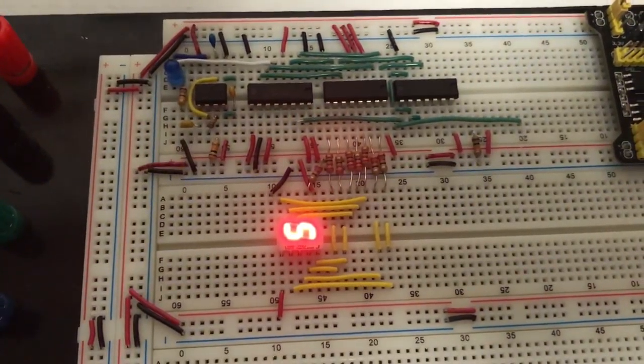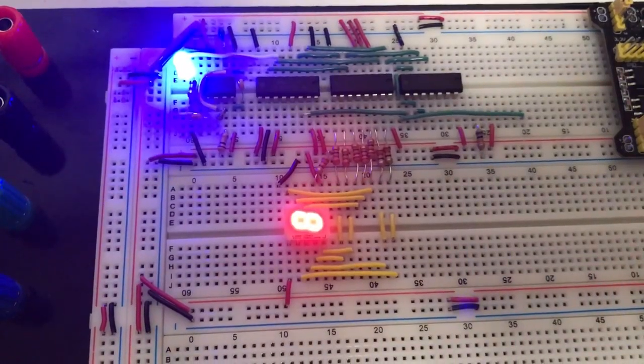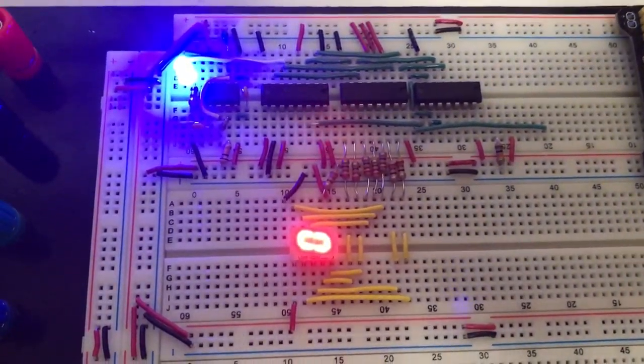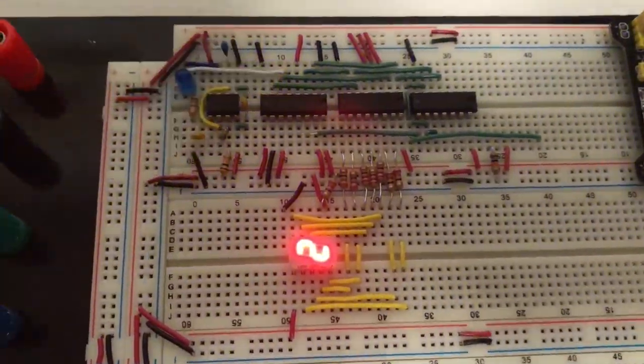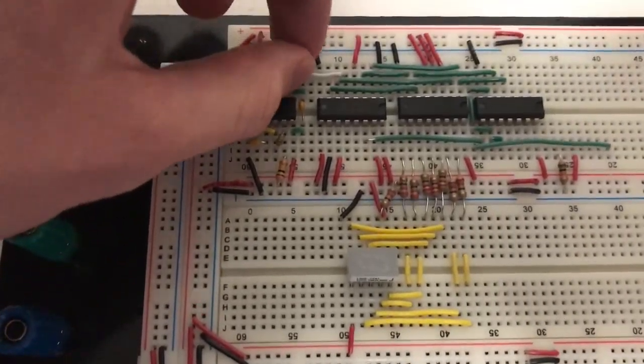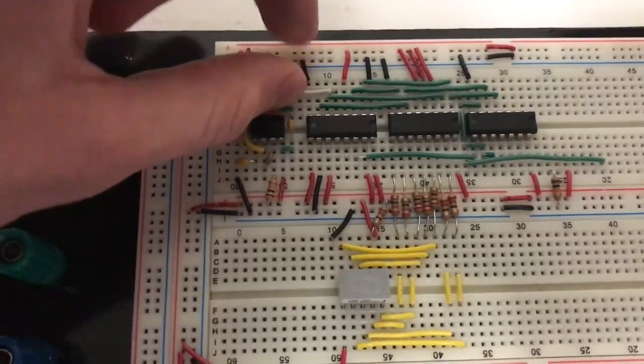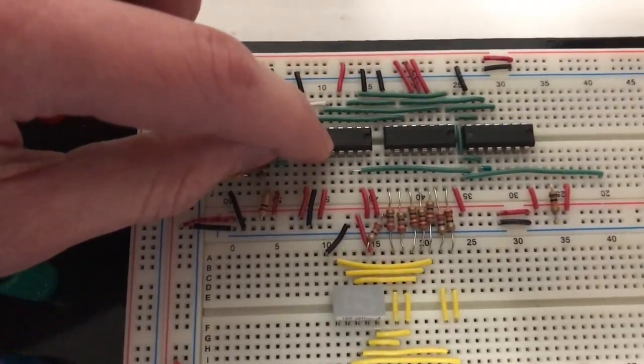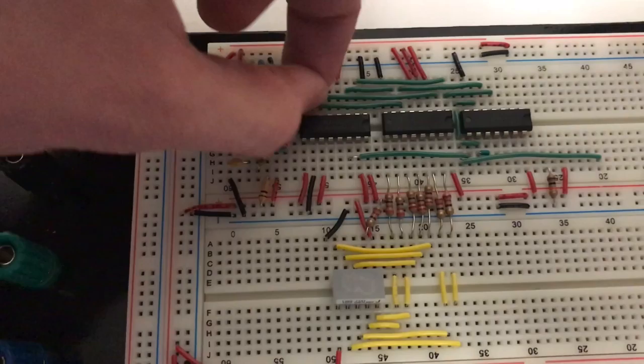This is in the counting up configuration right now, but this counter can also count down if I change some logic around. So if I turn this off, this is the clock signal. I'll change this from going into the up pin of the counter to now going into the down pin.